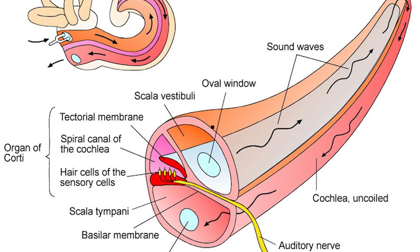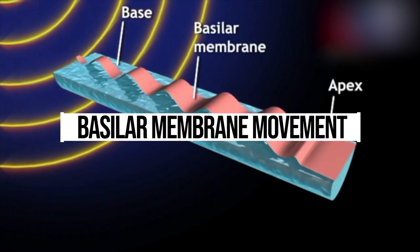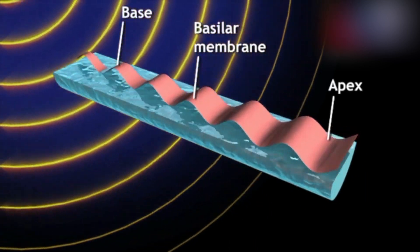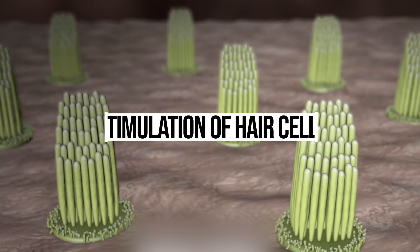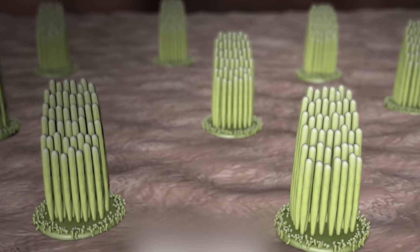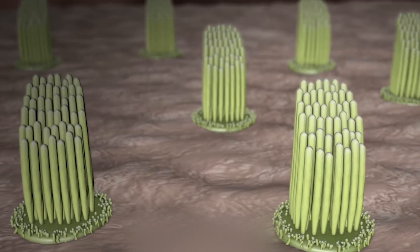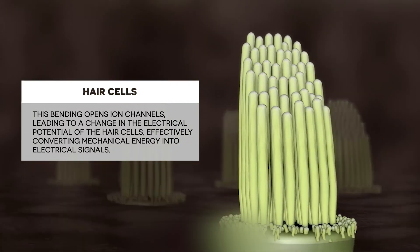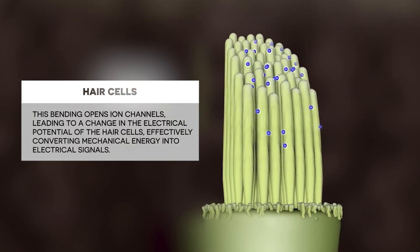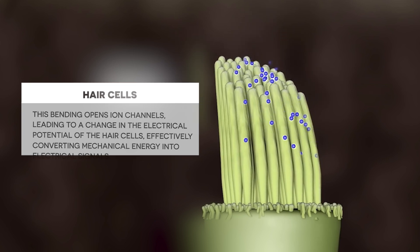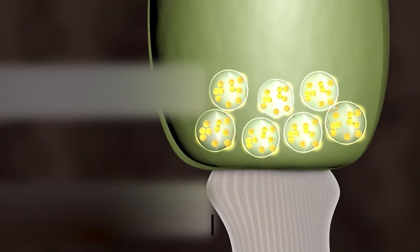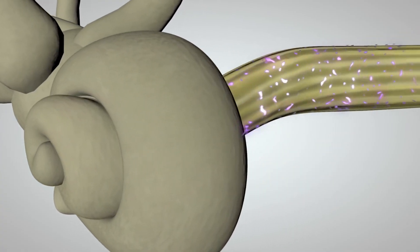Sound vibrations enter the cochlea via the oval window, causing movement in the perilymph of the scala vestibuli. These movements create a traveling wave along the basilar membrane, causing it to move up and down. The movement of the basilar membrane causes the hair cells in the organ of Corti to bend against the tectorial membrane. This bending opens ion channels, leading to a change in the electrical potential of the hair cells, converting mechanical energy into electrical signals. These electrical signals stimulate the auditory nerve fibers, which carry auditory information to the brain where it is interpreted as sound.